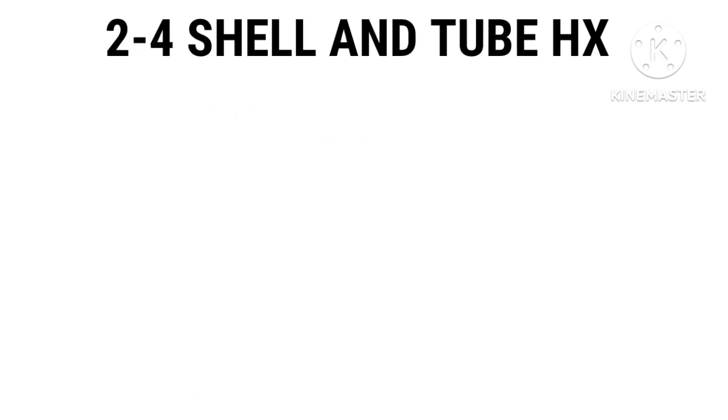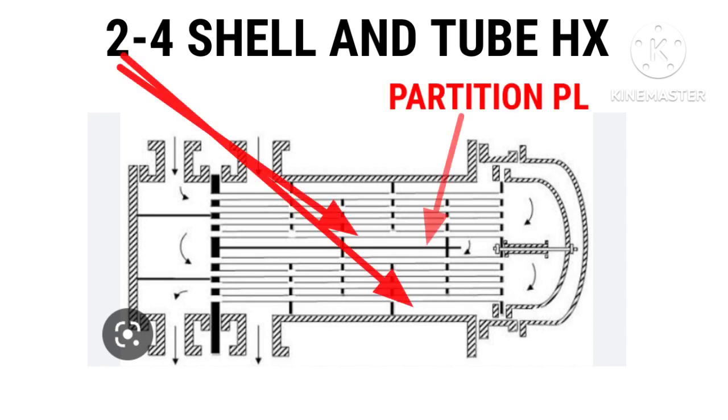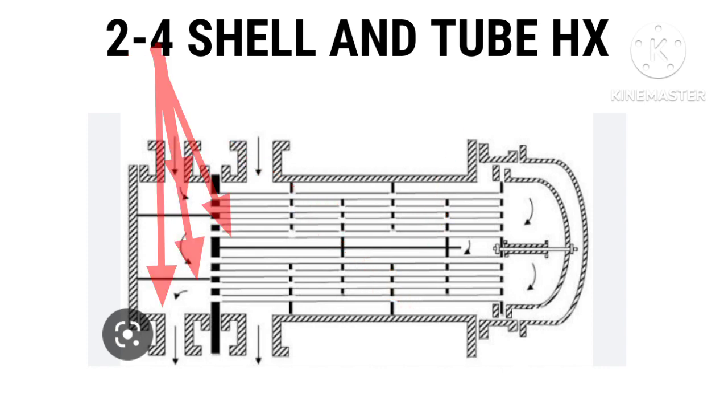What is two-four heat exchanger? The first number two means the fluid of shell-side flows twice in shell-side due to one side partition. Also, second number four means fluid of tube-side flows four times in heat exchanger due to two partitions as shown in figure.